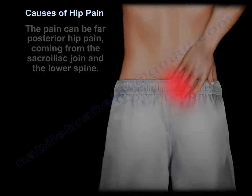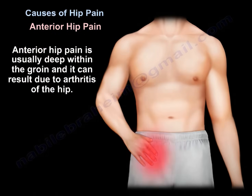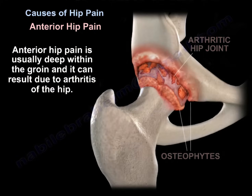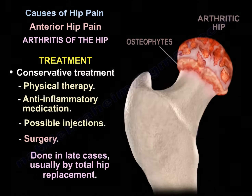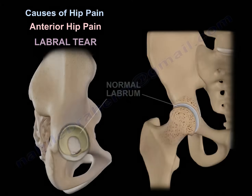Anterior hip pain, usually deep in the groin, can result from arthritis of the hip. The treatment is usually conservative, including physiotherapy, anti-inflammatory medication, and possible injections. Surgery is done in late cases, usually by total hip replacement.